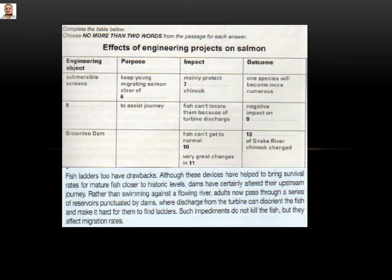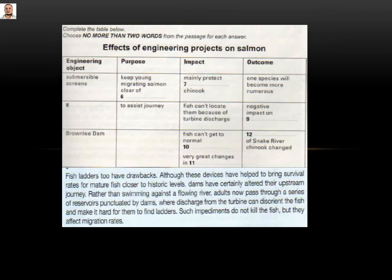We have negative impact on — that's number nine. Going on: 'Dams have certainly altered their upstream journey. Rather than swimming against a flowing river, adults now pass through a series of reservoirs punctuated by dams, where discharge from the turbine can disorient the fish and make it hard for them to find ladders. Such impediments do not kill the fish, but they affect migration rates.' They don't kill, but they affect — that means there is a negative effect. So the answer will be 'migration rates.'